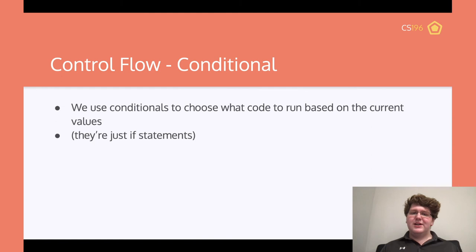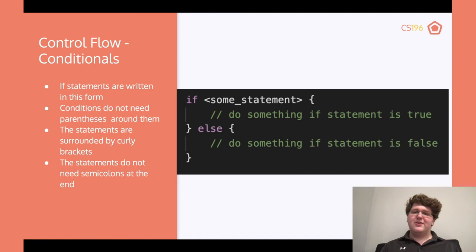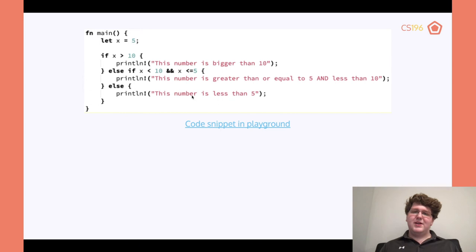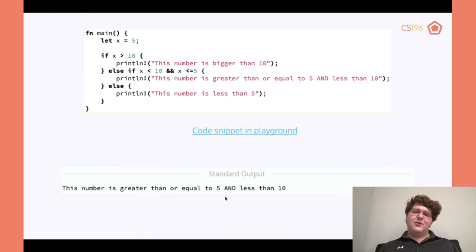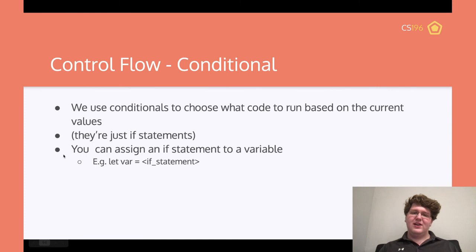We use conditionals to choose what code runs based on the current values — they're just if statements. This probably looks familiar from Python or Java. The only difference is you don't have parentheses around the condition and you don't need a semicolon at the end. Here is a simple if statement: if we run it, we get the number is greater than or equal to 5 and less than 10.